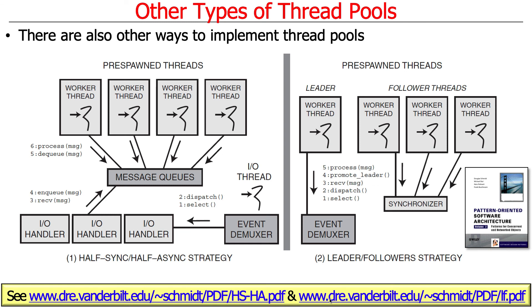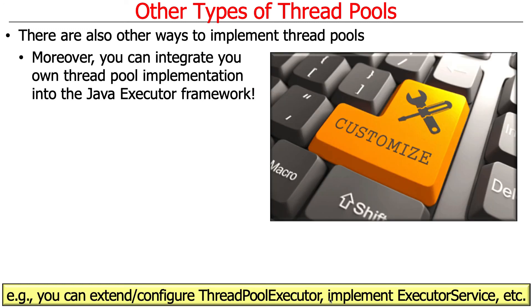It's also possible to implement your own thread pools using other models, such as the half-sync/half-async model or the leader-followers model. These don't come out of the box in Java, but APIs are provided that you can customize to implement your own thread pool type. Later, when we talk about the ThreadPoolExecutor class, I'll discuss how you can control other properties of threads and thread pools. So that's basically an overview of thread pools.